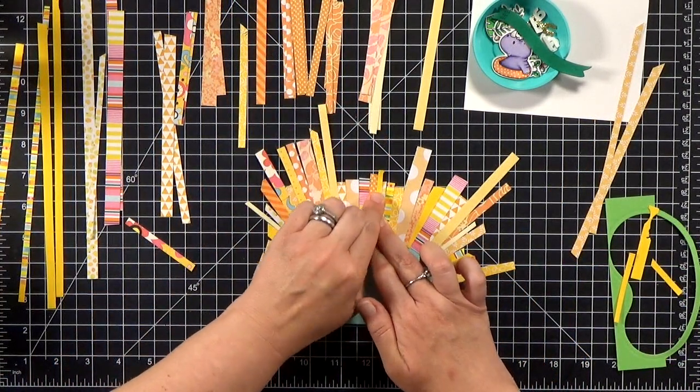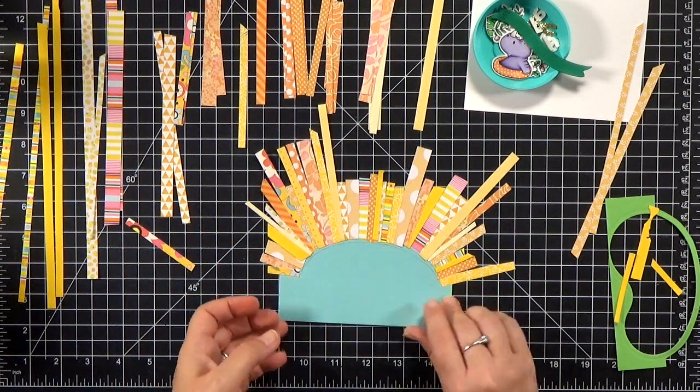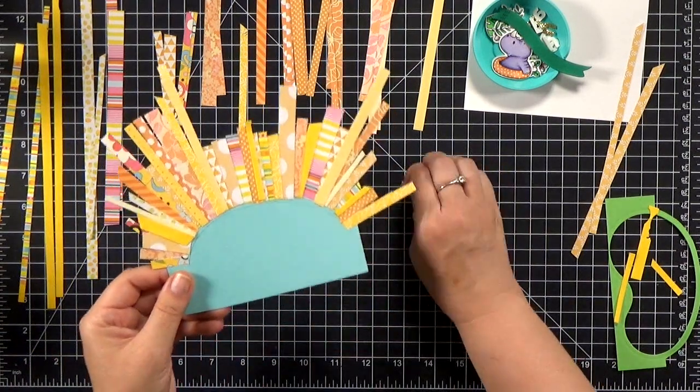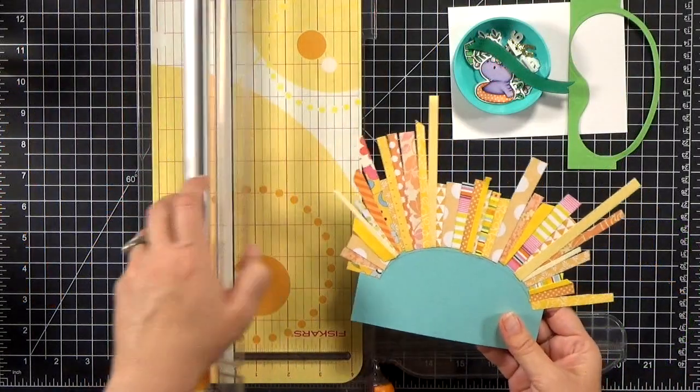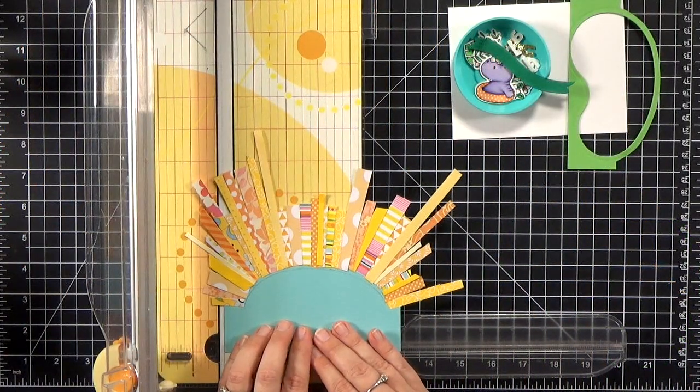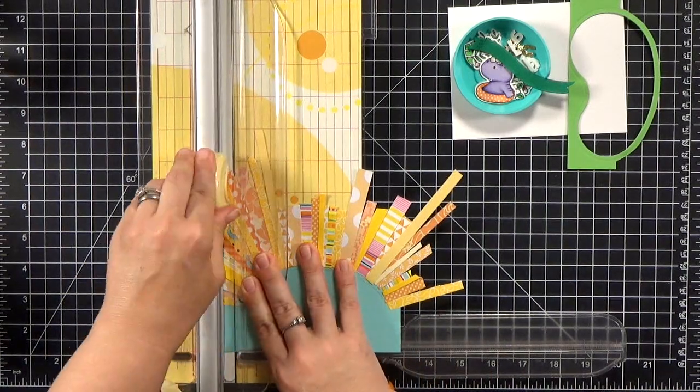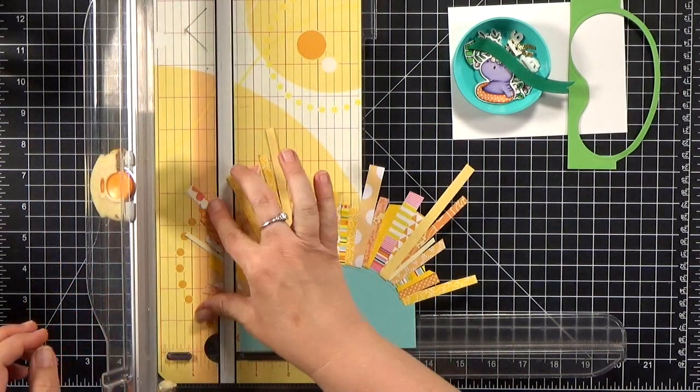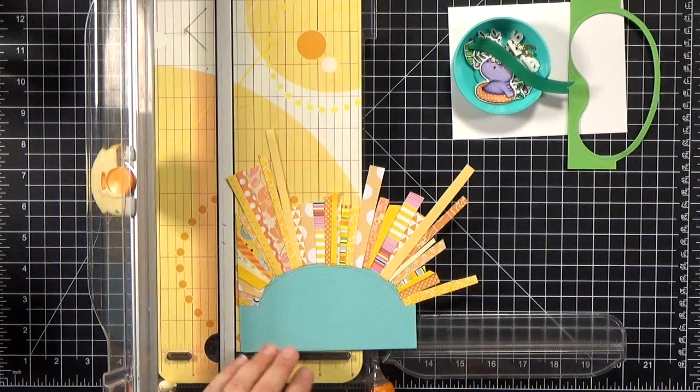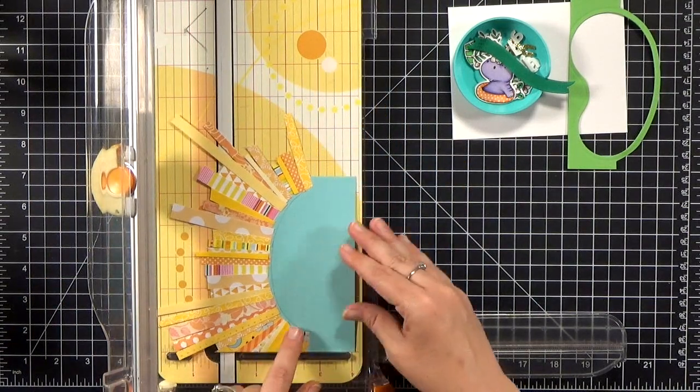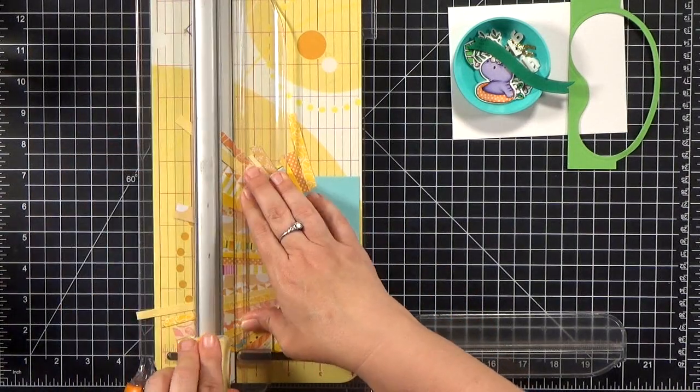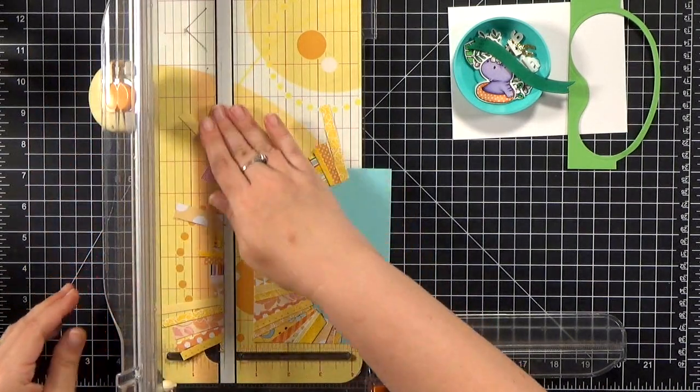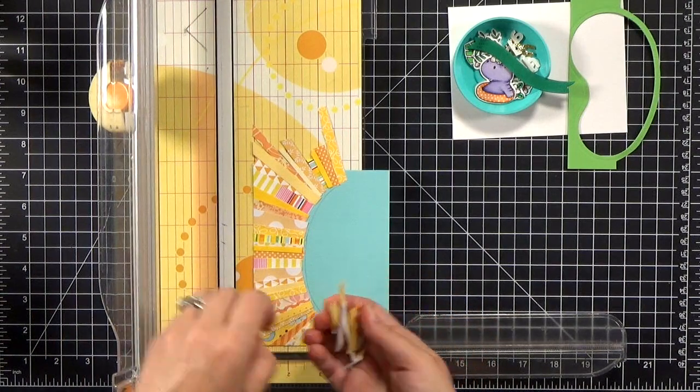So I glued them all down, filled in any little gaps, glued some of it to my mat and cleaned it up. And then I can just put it in my trimmer and trim away all of the little extra pieces that are hanging off the edges. By the way, this is a great way to use up scraps of pattern paper. And notice that I have pattern paper and some solid paper in there. So you can use whatever you've got on hand. And if something's not quite the right shade, you can even touch it up with your markers too.